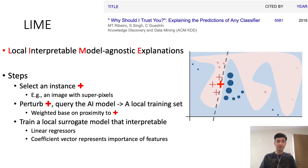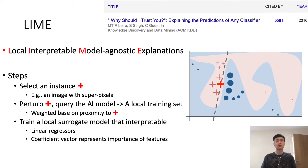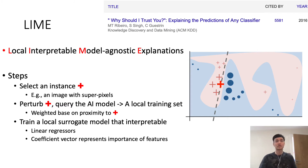Based on this weighted new training dataset — where the weights are based on the distance to the original instance — we can train a local surrogate model that is interpretable to human users. For LIME, it uses a traditional linear regressor model, and the coefficient vector after training represents the importance of the features.